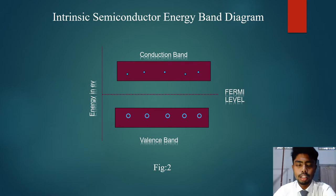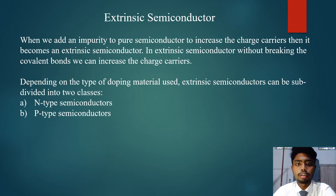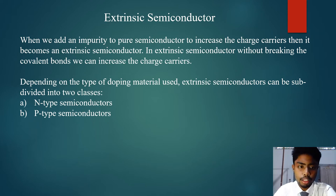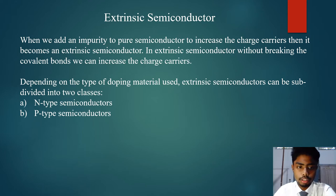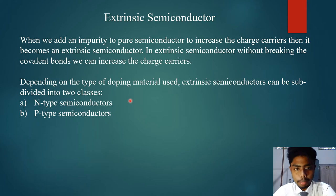Extrinsic semiconductors are those to which some suitable impurity or doping agent has been added in extremely small amounts — about one part in 10 to the power 8 — and are called extrinsic or impure semiconductors. Depending on the type of doping material used, extrinsic semiconductors can be divided into two types: N-type extrinsic semiconductors and P-type extrinsic semiconductors.